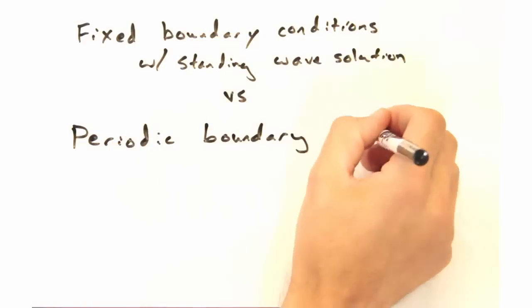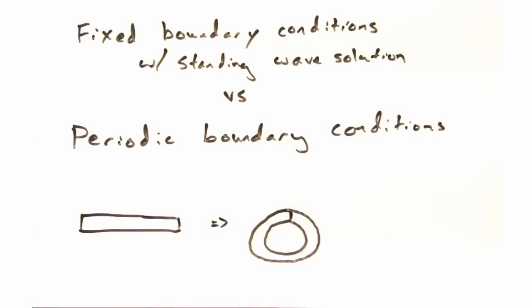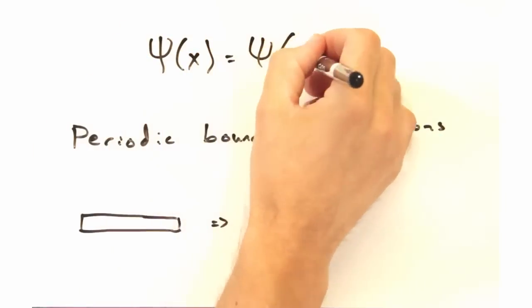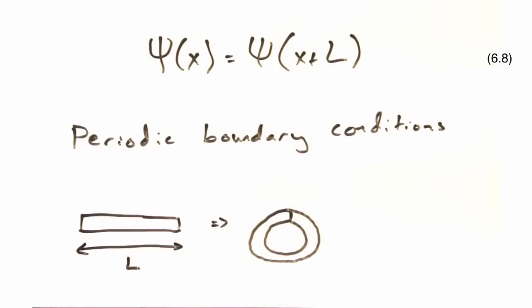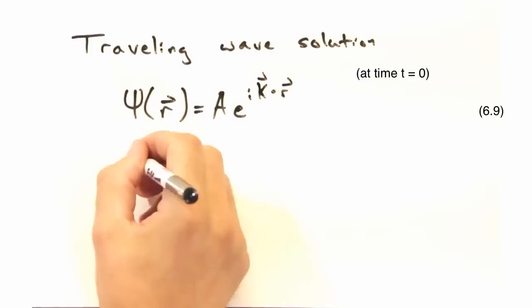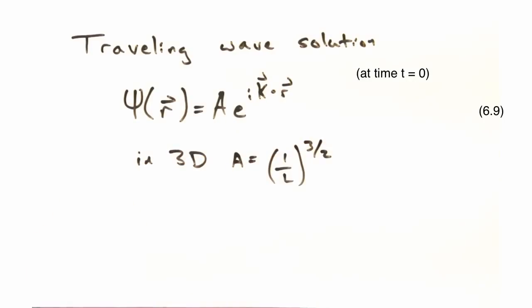How do you think psi will change for periodic boundary conditions? Well, for periodic conditions, our wave function at some position x should equal the same wave function at x plus l for 1D. So we could just use the traveling wave solution, where we have a complex exponential, and this time k is a vector.